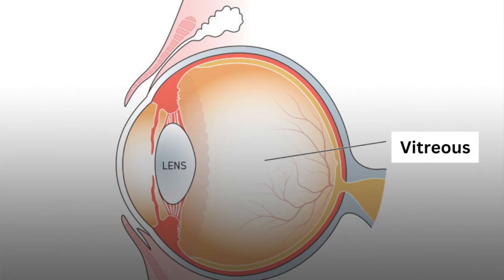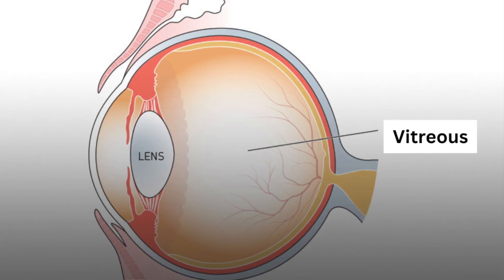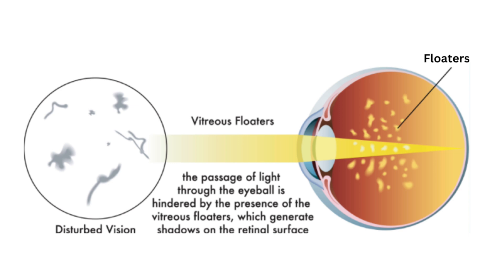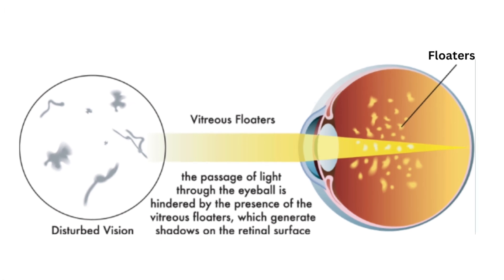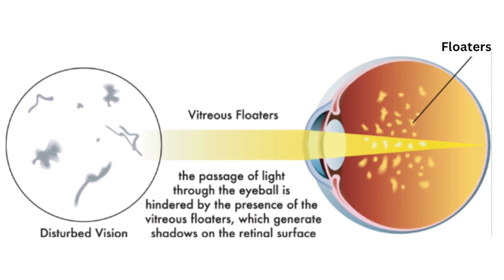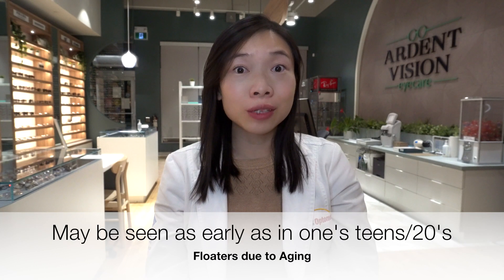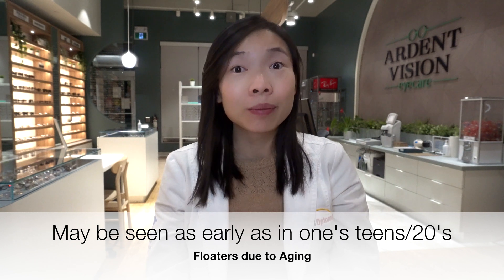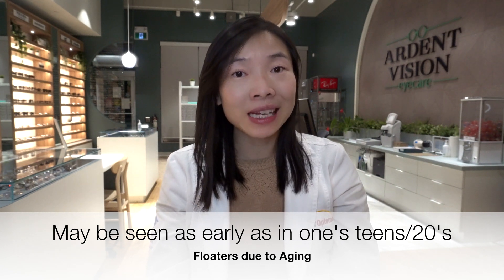The first most common cause of floaters as seen in my practice is floaters due to aging. Let's first talk about where all floaters take place. There's a jelly-like structure that fills the eye called the vitreous. As part of normal aging, scattered bits of collagen fibers floating in the vitreous tend to clump together. When it causes a large enough lump to cast a shadow on the back of the eyes as light passes through, we perceive floaters. These floaters are noticed by people as young as in their teens and 20s, but are more frequently noticed as one ages.